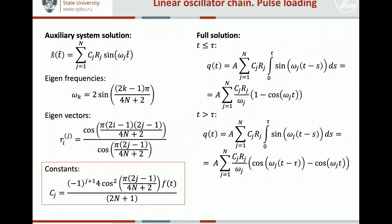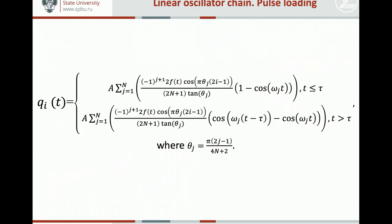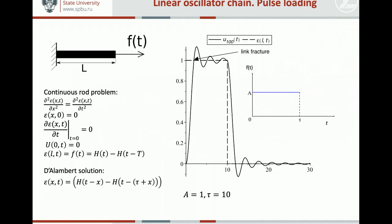Again, we solved it analytically using some tricks which are similar to Duhamel's method, but for a system of differential equations. We get this solution for the deformation of any link in our chain. It's a bit scary, but we can use it as useful. And again, we see that the pulse propagating through the chain is distorted, and this distortion may actually cause fracture of the link. While in a continuous problem, it is not possible. The traveling pulse is not distorted and no fracture occurs.